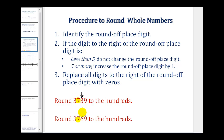And in the second example, the six tells us to round up or down. If the digit to the right is less than five, we do not change the round-off place digit. If it's more than five, we increase the round-off place digit by one. Then we replace all digits to the right of the round-off place digit with zeros.